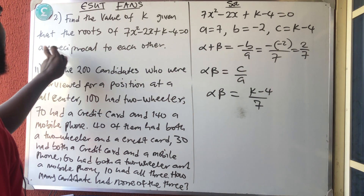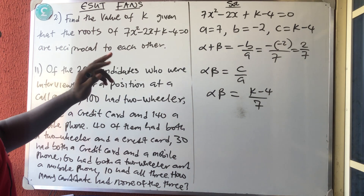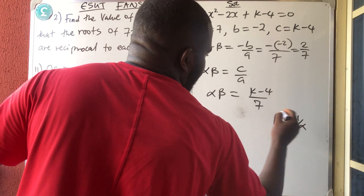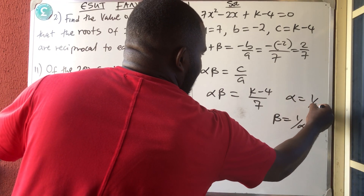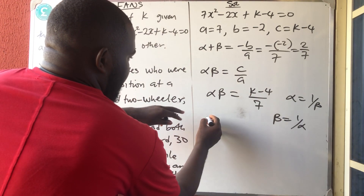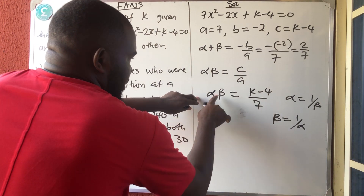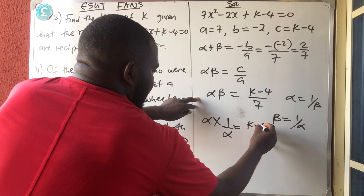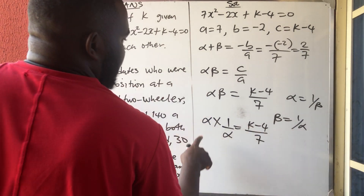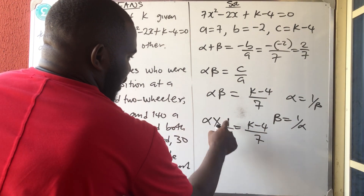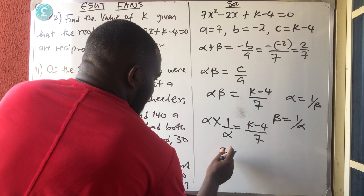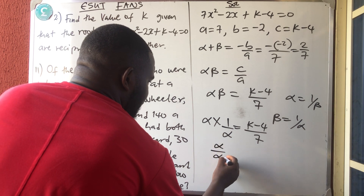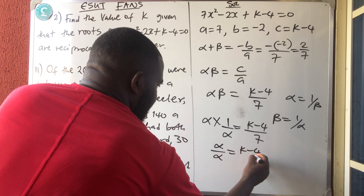But they say that the roots of this equation are reciprocal to each other. Reciprocal to each other means beta is the same as 1 over alpha, or alpha is the same as 1 over beta. So from here, if I have alpha times 1 over alpha — instead of writing beta — that is equal to K minus 4 all over 7. Alpha cancels alpha, and I'm left with 1.